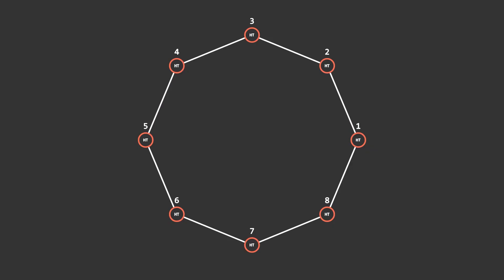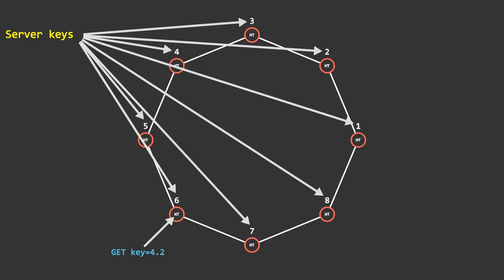Imagine a request for data key 4.2 arrives at server 6. Which server has the data key? This is where the server keys come in. Aside from one exception, all data keys in any one server are less than that of the server's key.